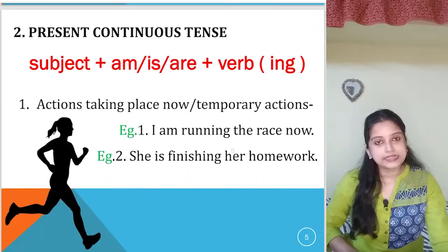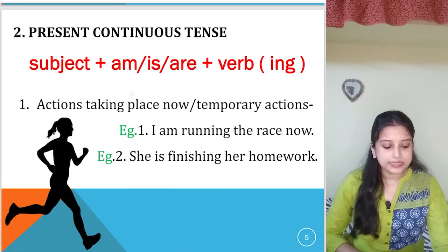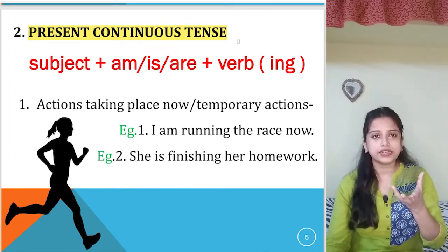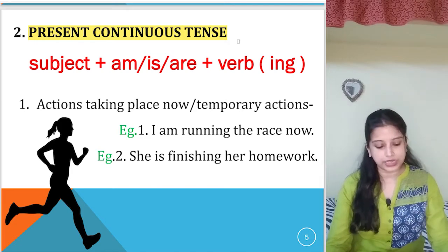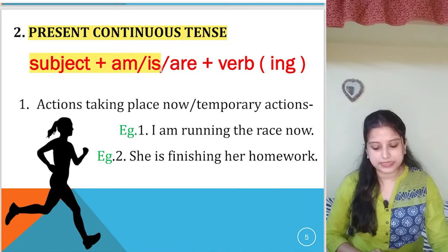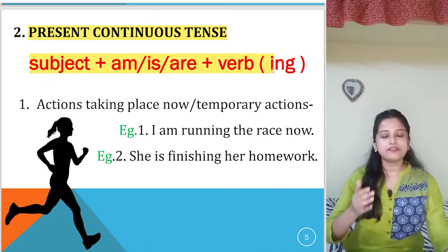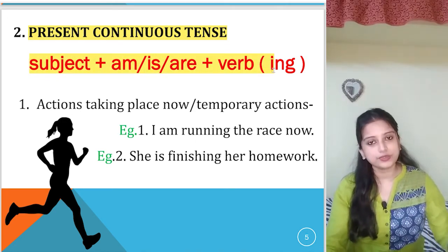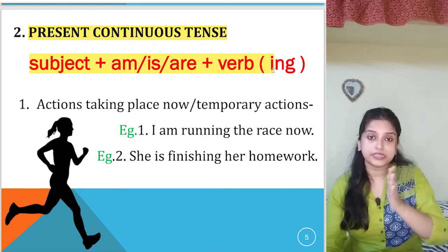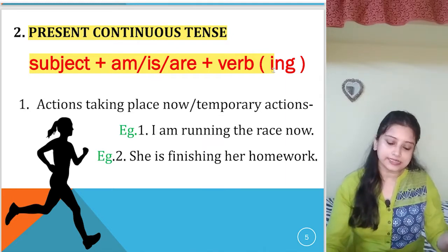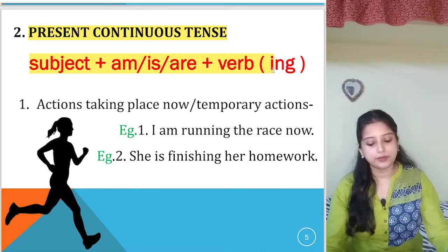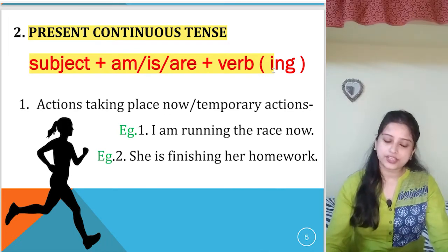Next, moving to present continuous tense. Present continuous tense is another easy one, similar to present tense, but the issue is it's a continuous action — meaning the action is going on. The formula is: subject plus am/is/are plus verb plus -ing. Use 'am' if the subject is 'I'; use 'is' for third person singular (he, she); use 'are' for plural or second person.